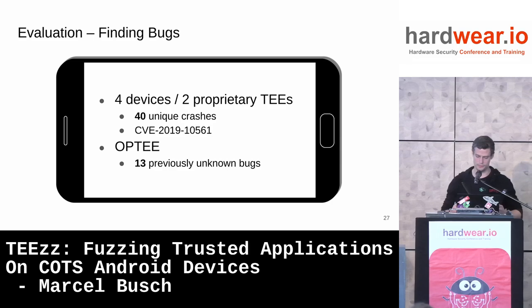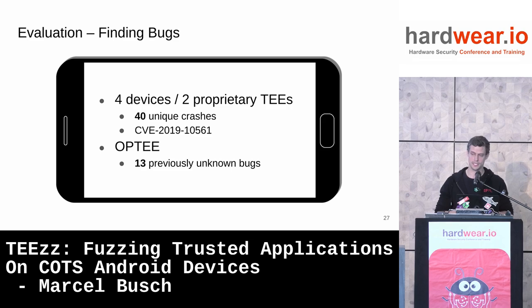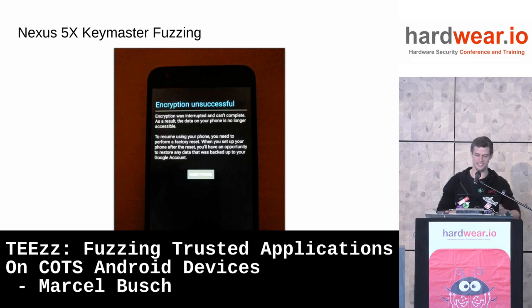In our full evaluation we found 40 unique crashes across four different devices and two proprietary TEEs. We also fuzzed OP-TEE, an open-source reference implementation, and found 13 previously unknown bugs. One interesting bug was on the Nexus 5X: after fuzzing Keymaster, you reboot the phone and suddenly decryption stops working. So if you want to annoy someone, talk dirty to their Keymaster and it won't decrypt their data partition anymore — forcing a factory reset.